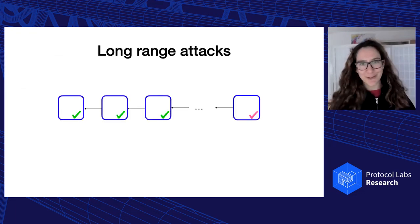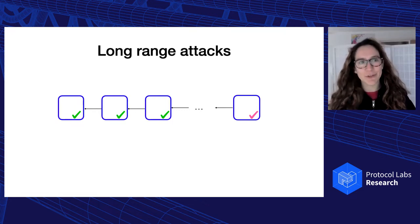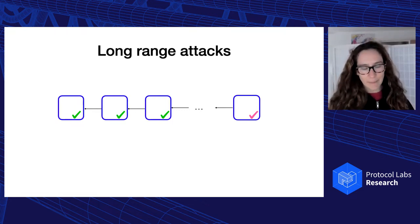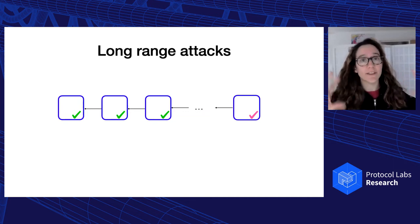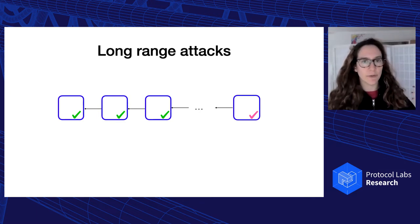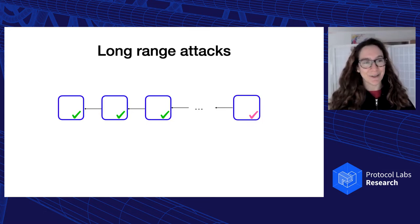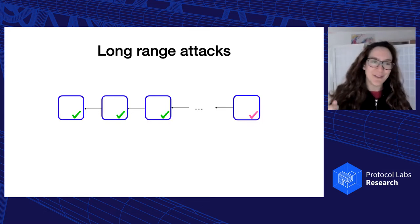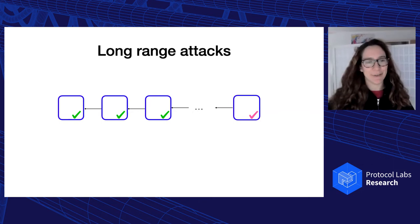So just to make sure that we are all on the same page, I'm going to illustrate what is a long-range attack. So the idea behind the long-range attack is that we have a set of validators that are responsible for maintaining the proof-of-stake chain. But after some time, this validator, they will leave the system and other validators will take over. That's like a natural, dynamic committee thing. So for example, in my slide, we start with the green validators. And then later on, we move to the pink validator.